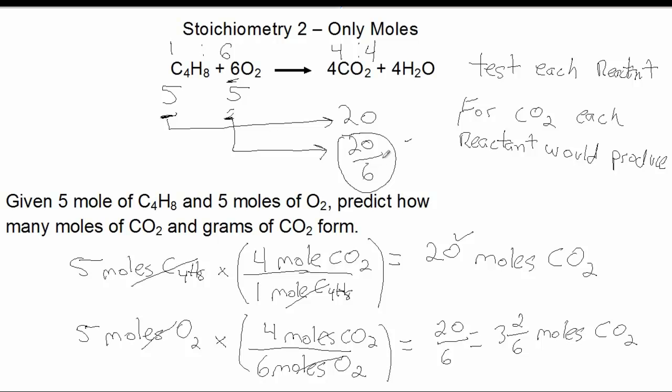The answer is 20 over 6 moles of CO2. The next step would be to convert the 20 over 6 moles of CO2 to grams. You would follow the same process as before: multiply the 20 over 6 of CO2 times 44 grams per mole. To complete the thought, if this reaction were carried out, we would consume all of the O2, but we would have some of the C4H8 remaining as excess reactant.